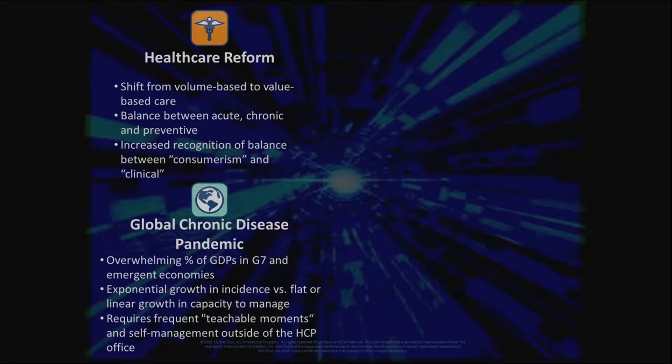At the same time, with healthcare reform, we're shifting from volume-based care to value-based care. Why does our healthcare system pay $20,000 to cut off your foot because of a diabetic ulcer, but won't pay three bucks a month for a foot exam? We're too focused on acute care when we should be shifting emphasis to chronic and preventive care. Activity and food underlie any chronic condition — if we can manage those, we lower both the cost burden and incidence of chronic disease.